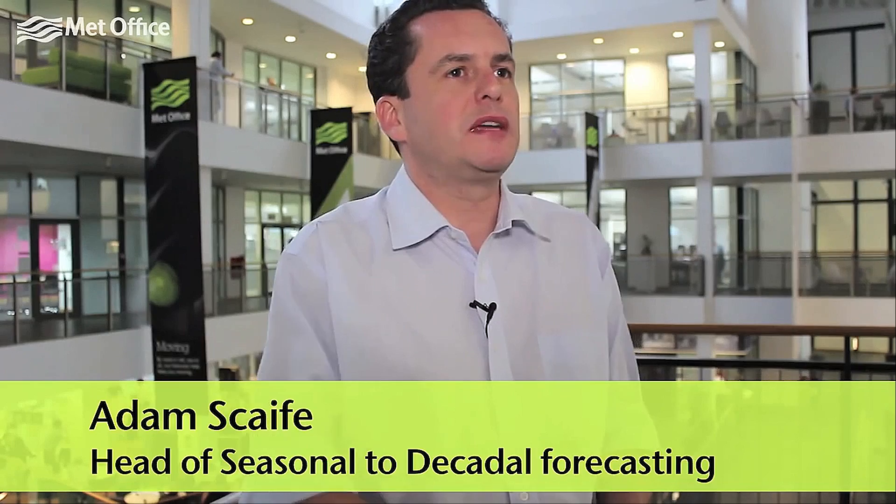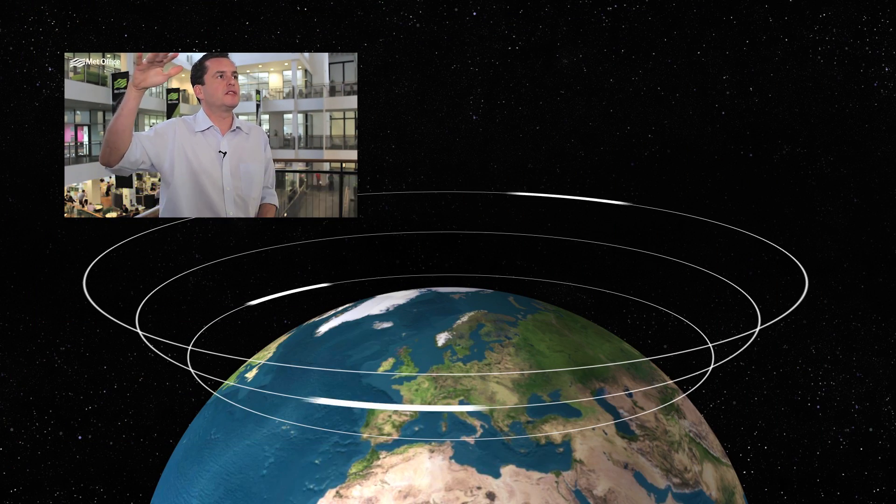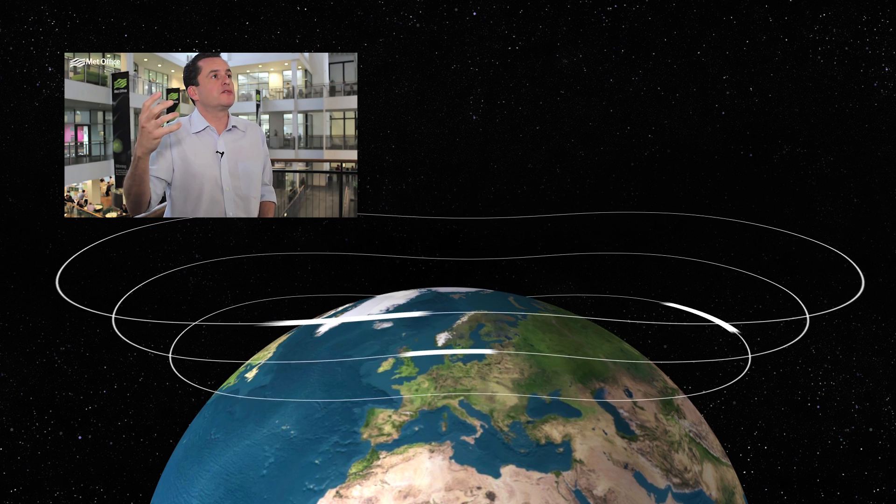A sudden stratospheric warming begins 50 kilometres above the surface in the very high altitude jet stream, where a wave-like disturbance begins to disrupt the jet stream.